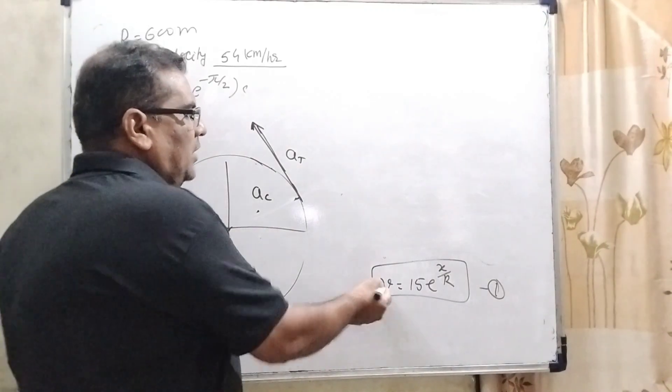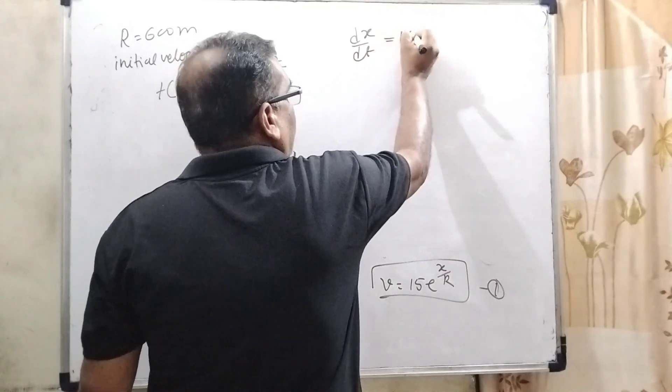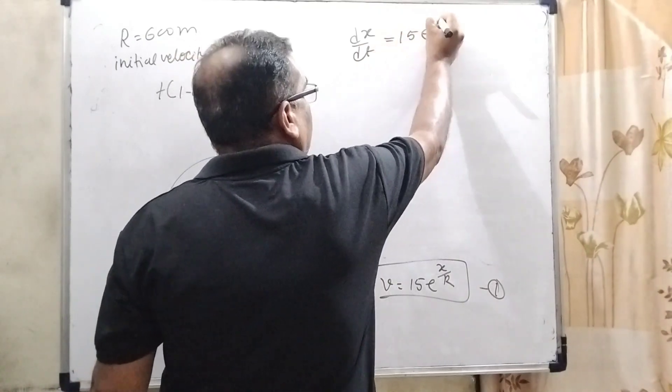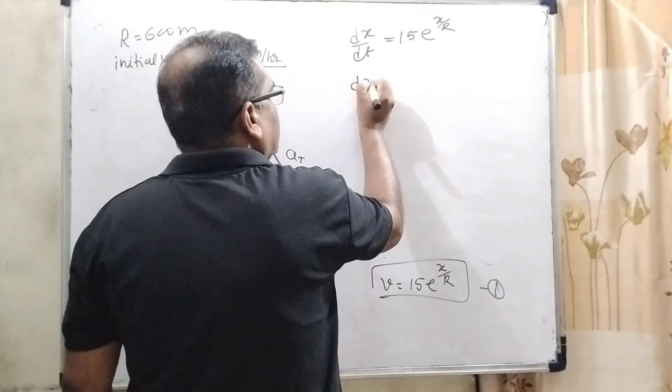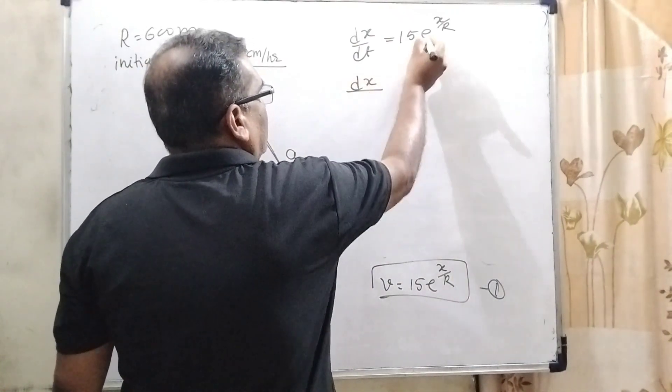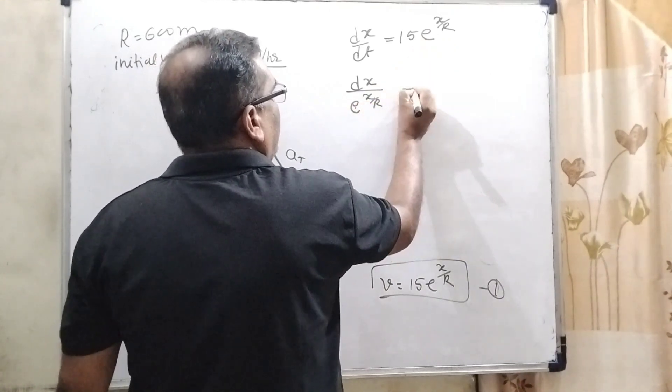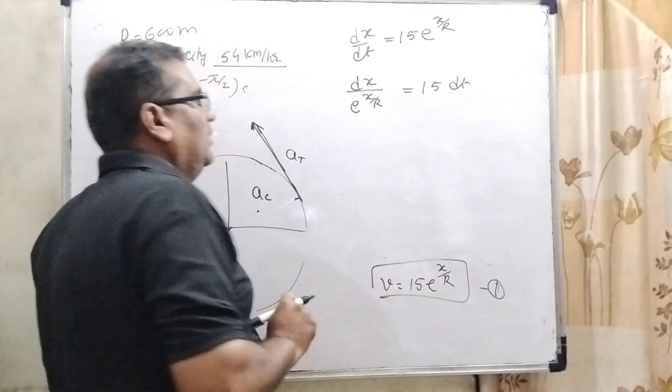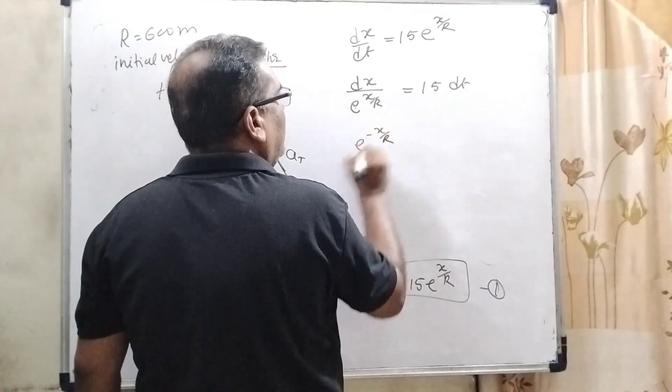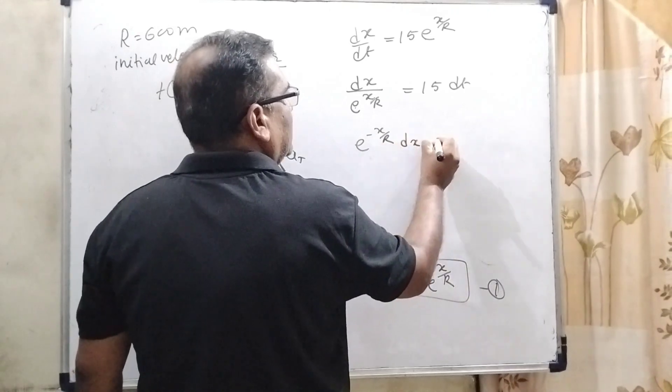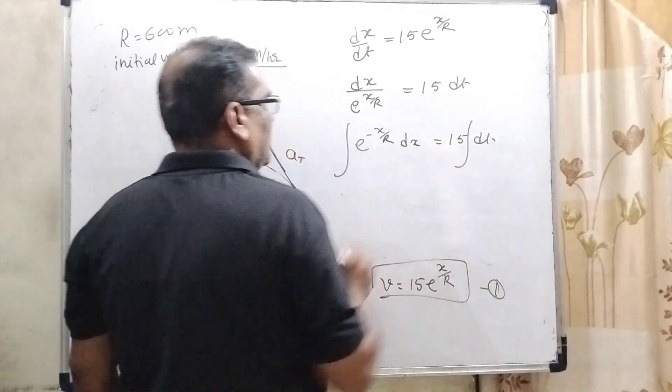Now, velocity can be written as dx/dt = 15e^(x/r). Transposing, (dx)/(e^(x/r)) = 15dt, or using exponent rule, e^(-x/r)dx = 15dt. Applying integration here.